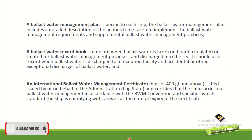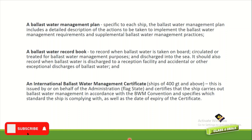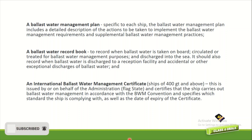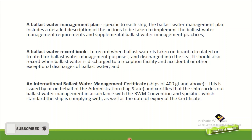A ballast water record book is required to record when ballast water is taken on board, circulated or treated for management purposes, and discharged into the sea. It should also record when ballast water is discharged to a reception facility, and accidental or other exceptional discharges. An international ballast water management certificate is required for ships of 400 GT and above. This is issued by or on behalf of the administration (flag state) and certifies that the ship carries out ballast water management in accordance with the convention, specifying which standard the ship complies with and the certificate's expiry date.